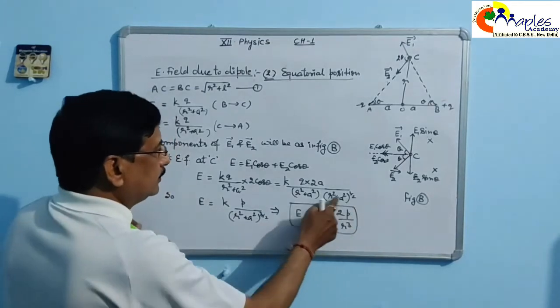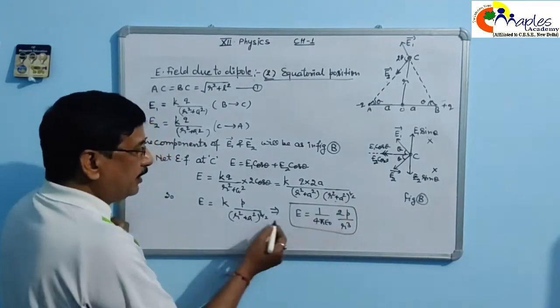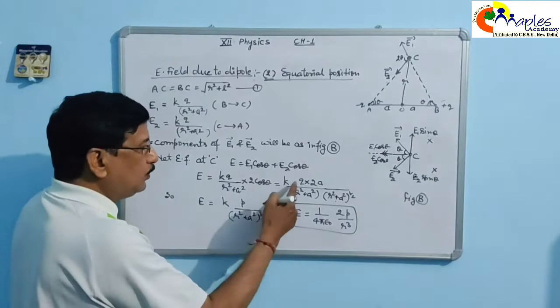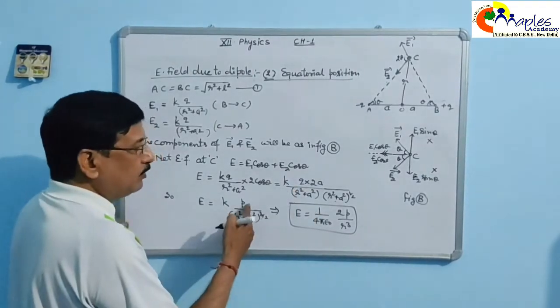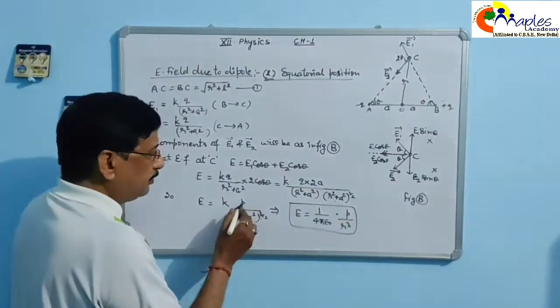So this will be multiplied, power will be 3 by 2. And Q into 2A is P, the dipole moment. So it is P upon this.